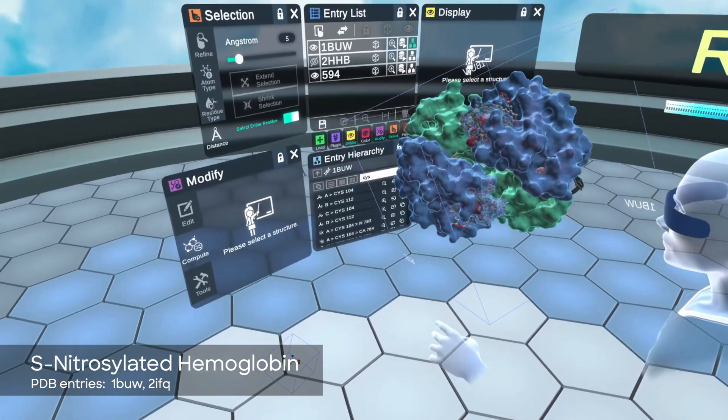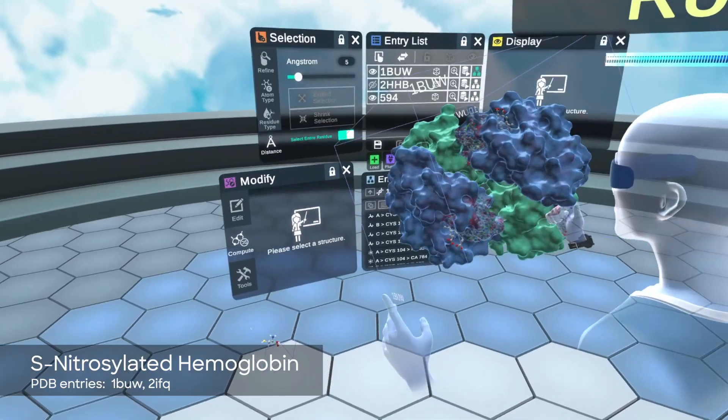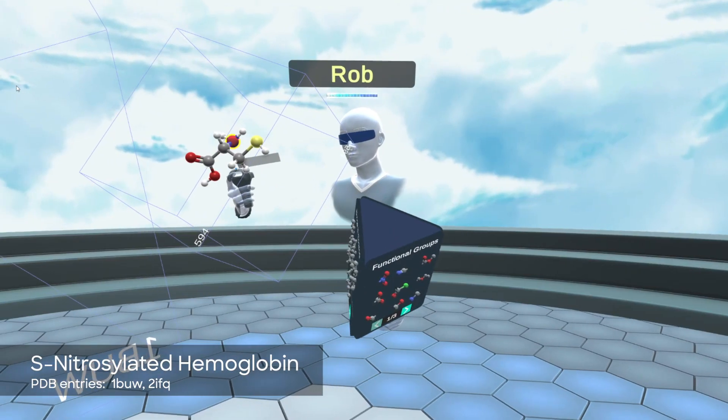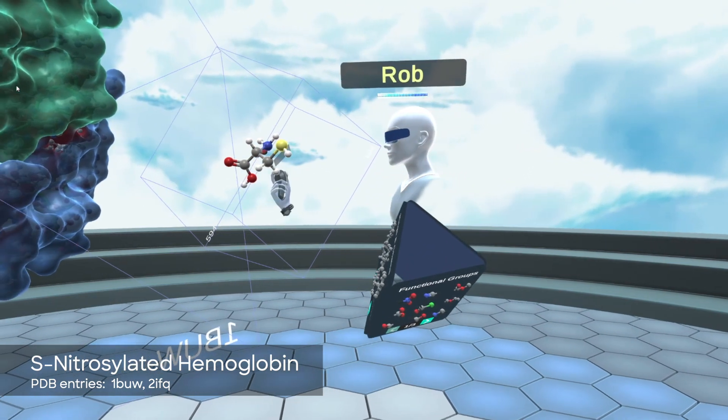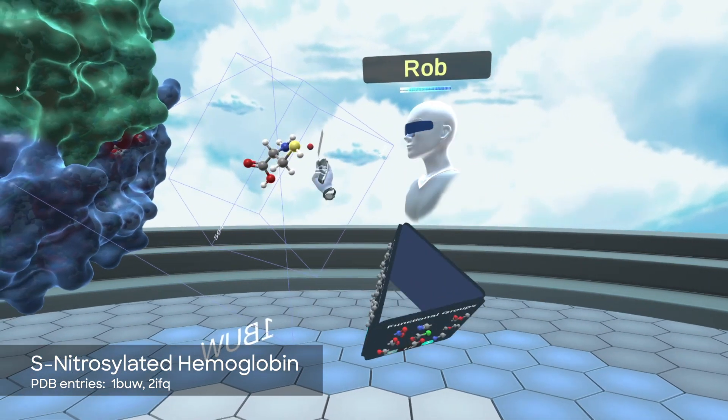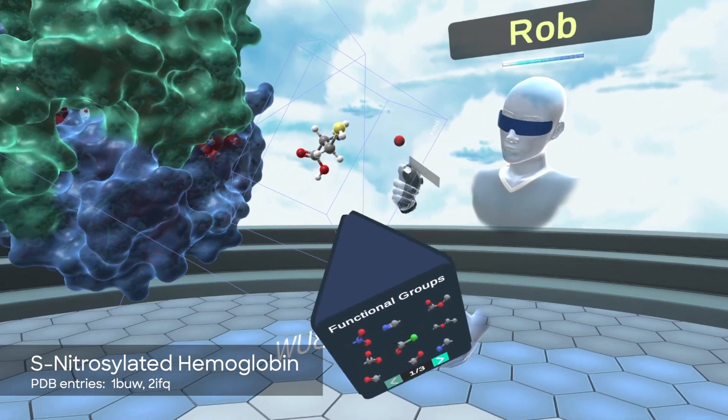On these beta chains, there is a residue, in other words, an amino acid known as a cysteine. So here we have the cysteine amino acid, which has a sulfur group, as you can see, and it is super important to the nitric oxide binding functionality of hemoglobin.